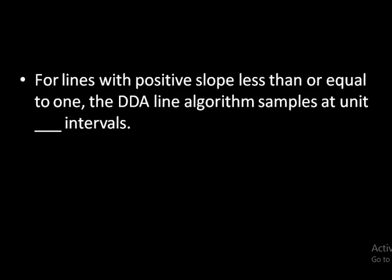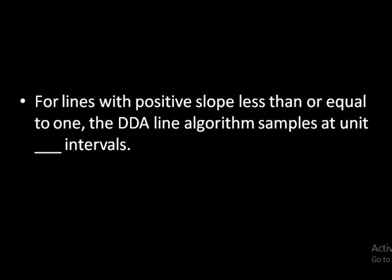Next question: for lines with positive slope less than or equal to 1, the DDA line algorithm samples at unit x intervals. The answer is x intervals — that is, delta x will be equal to 1, meaning the x value is incremented by 1 in each step.